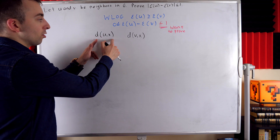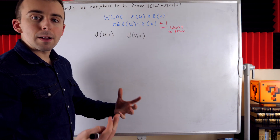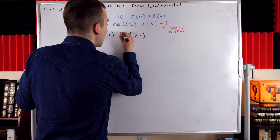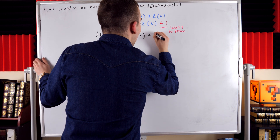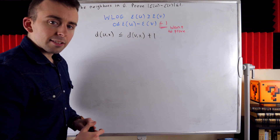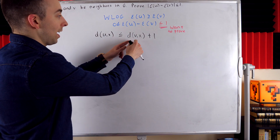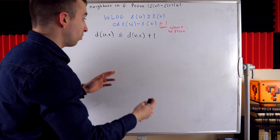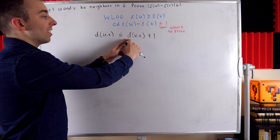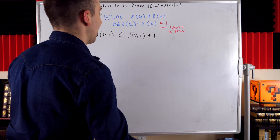How does the distance between u and a vertex x relate to the distance between v and x? At first you might think we don't really know — this could be bigger, smaller, or equal. But if you remember that u and v are neighbors, adjacent in our graph, we can actually say for sure that the distance between u and any vertex x is less than or equal to the distance between v and x plus 1. That's because to get from u to x, we could just go from u to v — a length of 1 — and then go from v to x. So we always have a path from u to x of length at most 1 plus the distance between v and x.